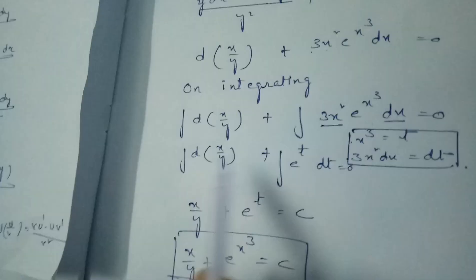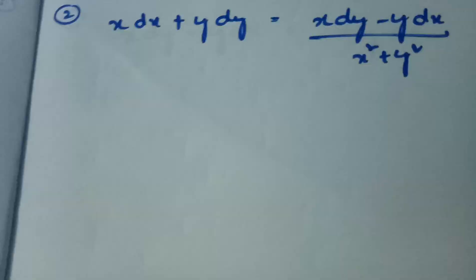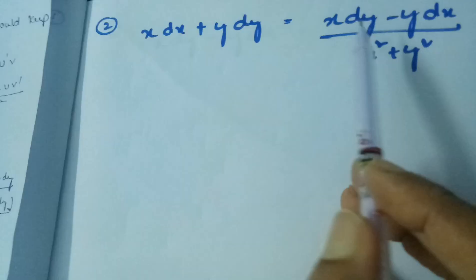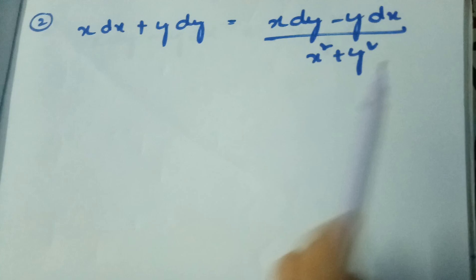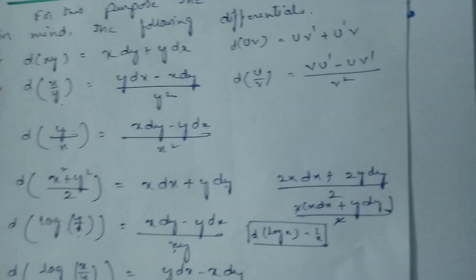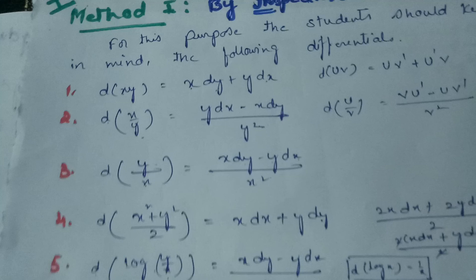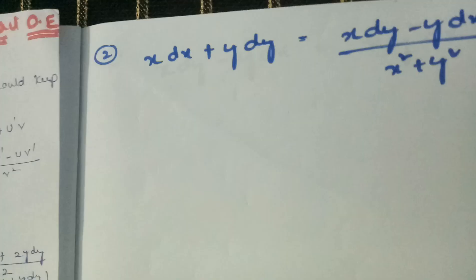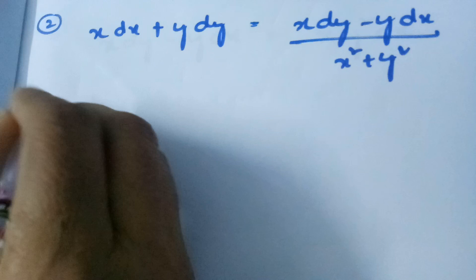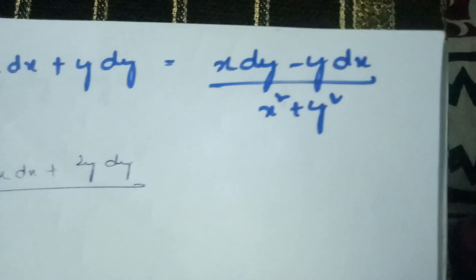The next problem is: x dy + y dx = (x dy minus y dx) / (x² + y²). To solve this by inspection, we check all the formulae to find a match. Multiply and divide by 2 to fit into one of the formulae. After multiplying and dividing by 2, the left side involves d(x² + y²) and the right side becomes (x dy minus y dx) / (x² + y²).